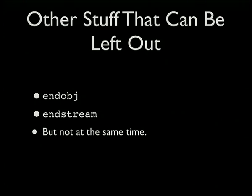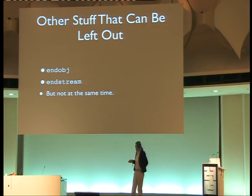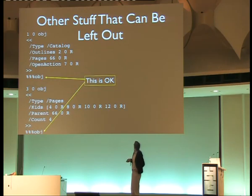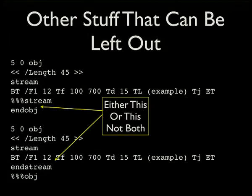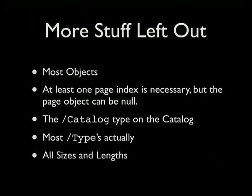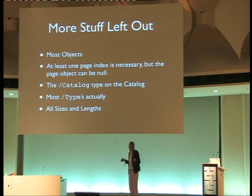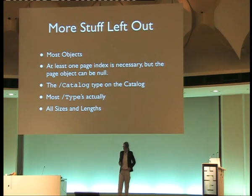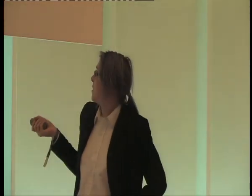You can leave out the end-object or endstream tokens — if you have one or the other it's okay, but if you leave both out the parser gets confused and objects start to merge together. You can also leave out most object references and have them defined inline. You can leave the catalog type declaration off because it's inferred from context. Many types can be omitted since they're figured out from context, along with sizes and links.